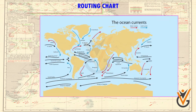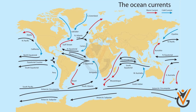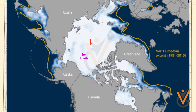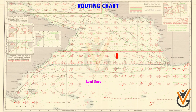Routing charts include information on ocean currents, ice limits, load lines, and wind roses, which are required for planning voyages. There are routing charts available for every three months of a year.